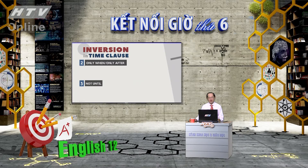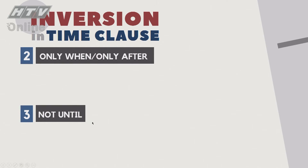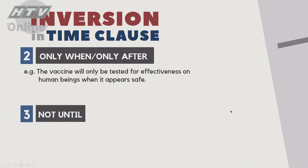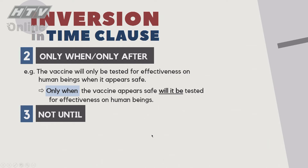Cấu trúc inversion tiếp theo: 'Only when', 'only after', hoặc 'not until' đều có nghĩa là 'khi cái gì đó xảy ra thì mới...' Ví dụ: 'The vaccine will only be tested for effectiveness on human beings when it appears safe.' Câu này được đảo ngữ bằng cách lấy 'Only when' lên đầu: 'Only when the vaccine appears safe will it be tested for effectiveness on human beings.'